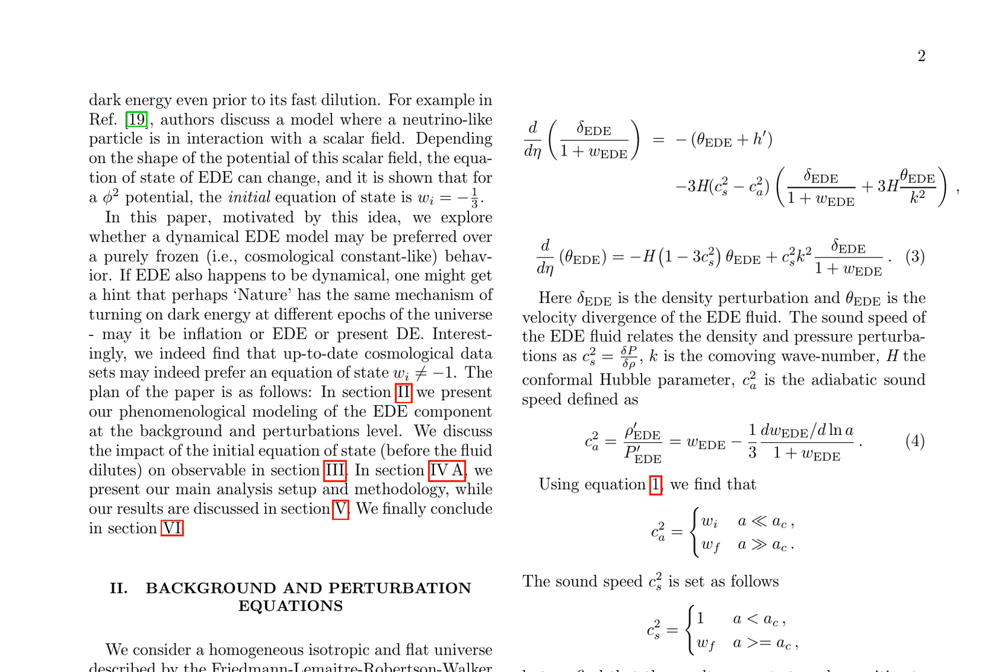The authors model the EED component using a generalized fluid description, specifying its equation of state W, sound speed C squared s, and an isotropic stress set to zero. The equation of state is parameterized as W(a) equals WF plus (WI minus WF) over (1 plus (a/AC) cubed). Where WI and WF are the initial and final equations of state parameters.